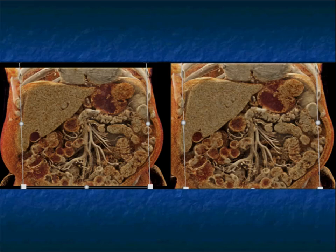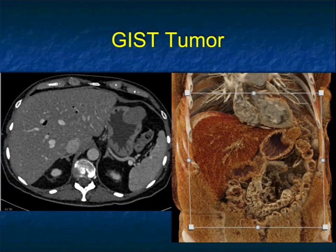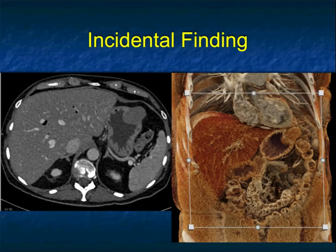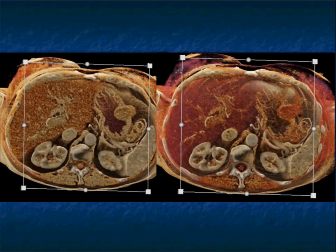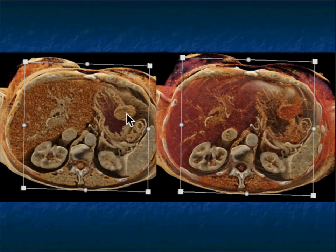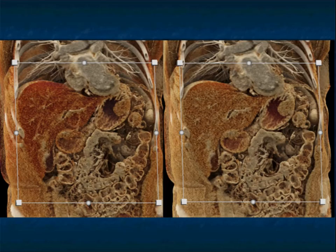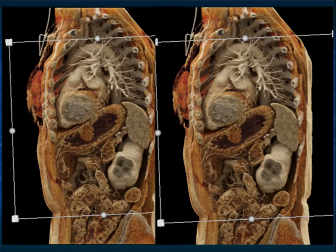A few more images: cinematic rendering nicely shows the vessels and small bowel. Here it is side by side — smooth muscle tumor, GIST. This was an incidental finding; it's not uncommon to pick up smaller GIST tumors when patients are asymptomatic. This one is both endophytic in the lumen and exophytic — it's not uncommon to see this appearance, and sometimes these are the ones that ulcerate on the endoluminal component.